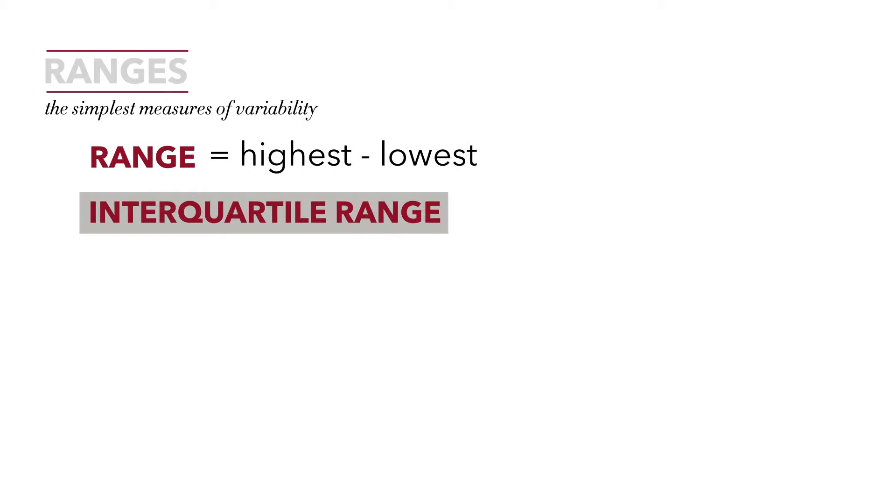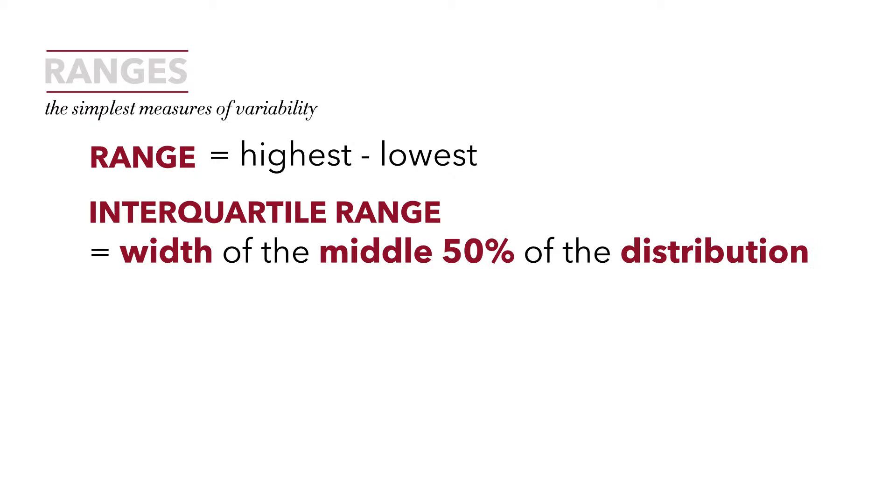The interquartile range, slightly more complex, indicates the width of the middle 50% of the distribution. We formally calculate it by taking the point of the third quartile and subtracting the point of the first quartile.